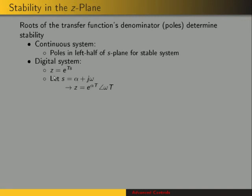For a digital system we're using z, which is defined as e to the Ts where T is the sampling period. If we let s equal the complex variable alpha plus j times omega, then we get that z is equal to magnitude e to the alpha-T at an angle omega-T. So we're going to look at stability in the s-plane and then translate that into the z-plane.